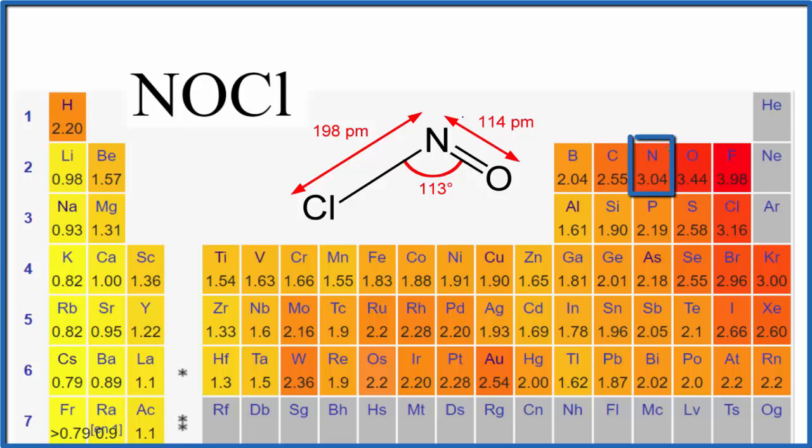We have nitrogen in the center at 3.04, oxygen at 3.44, and chlorine at 3.16. The most electronegative element is oxygen. This double bond means two pairs of electrons are shared, but not equally - they'll spend more time with the oxygen. Since electrons are negative, we would expect the oxygen to be more negative than the nitrogen and chlorine.